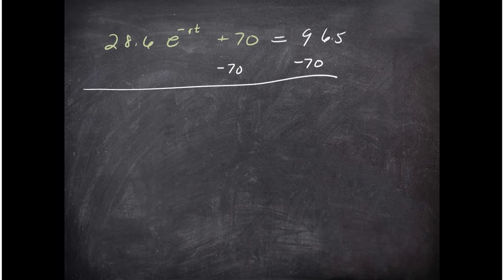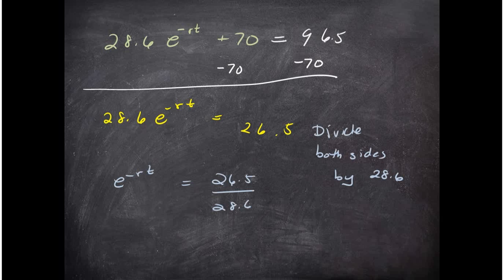Well first, here's my equation. I'm going to start out—the first step is to remove the number, so I'm going to remove the 70 over to the right side by subtraction.